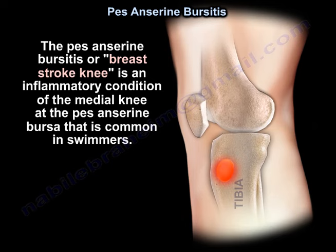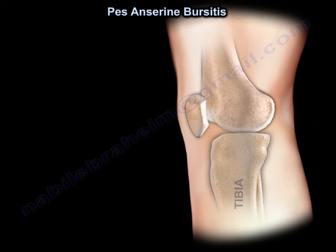Pes anserine bursitis, also known as the breaststroke knee, is an inflammatory condition of the medial knee at the pes anserine bursa that is common in swimmers.